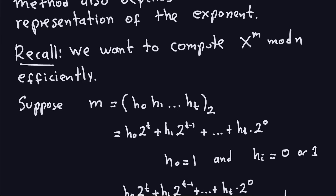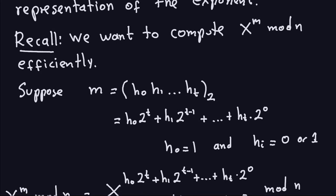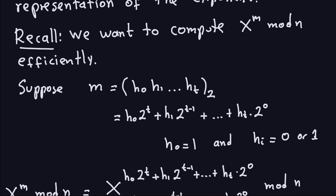The 1s represent the coefficients of the powers of 2. So basically that line is just saying what the binary representation means. And of course, h0 is 1, and the other ones can be 0 or 1. With that idea in mind, let's look at m, which is what I'm about to compute: x to the m modulo n.